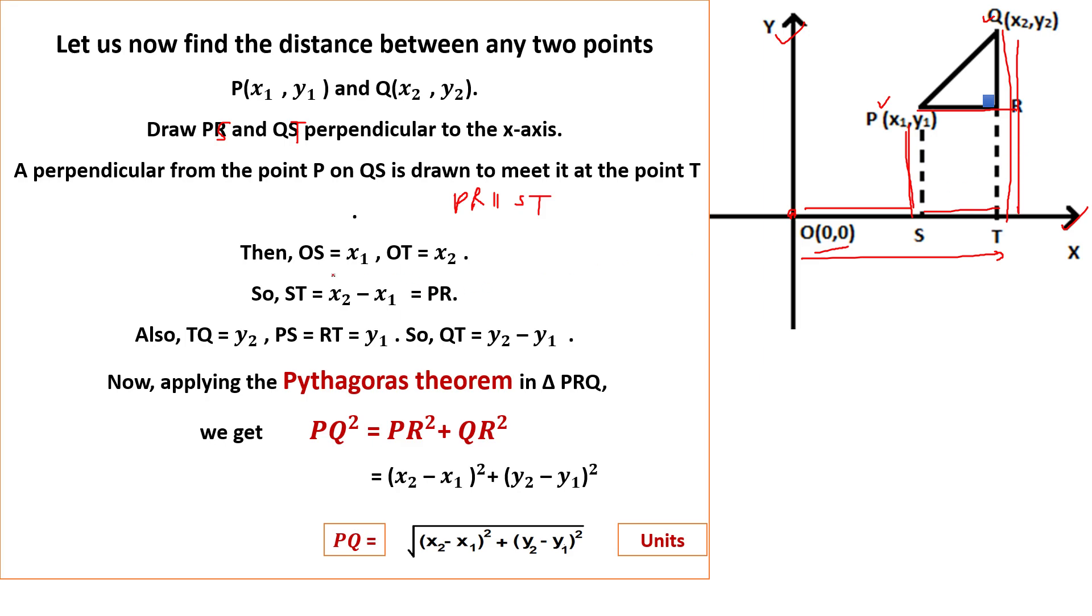So let us find out first ST. How to find out ST? This one. When we subtract OS from OT, it will be x2 minus x1, that is equal to PR. ST is equal to PR.